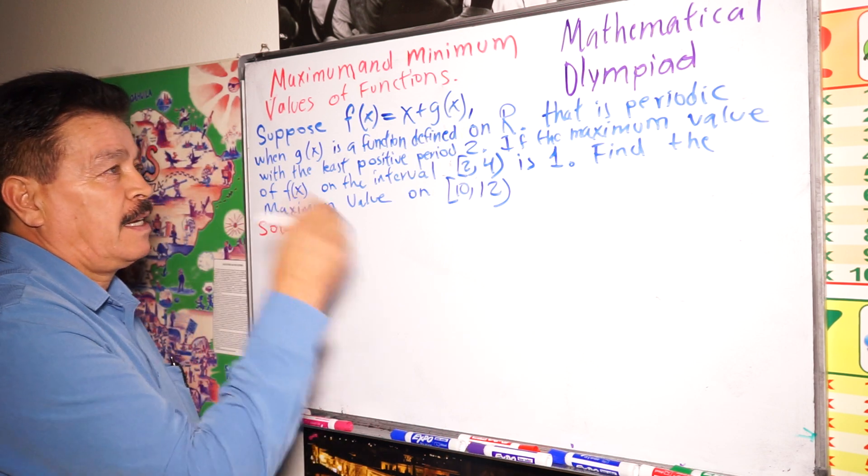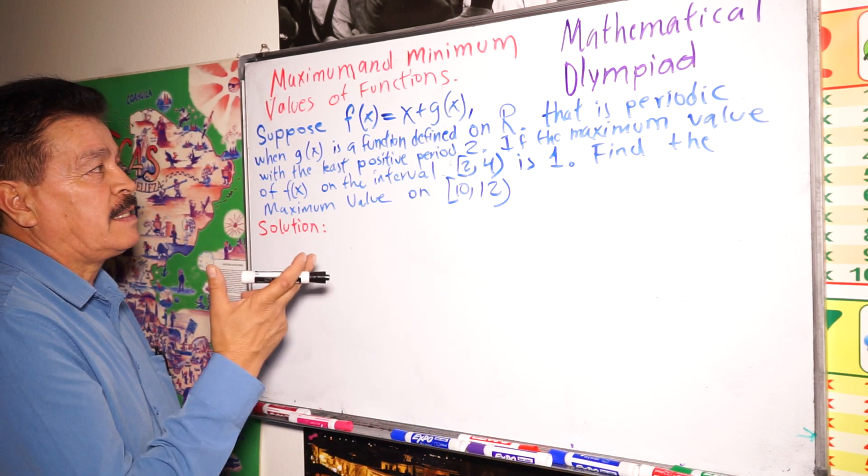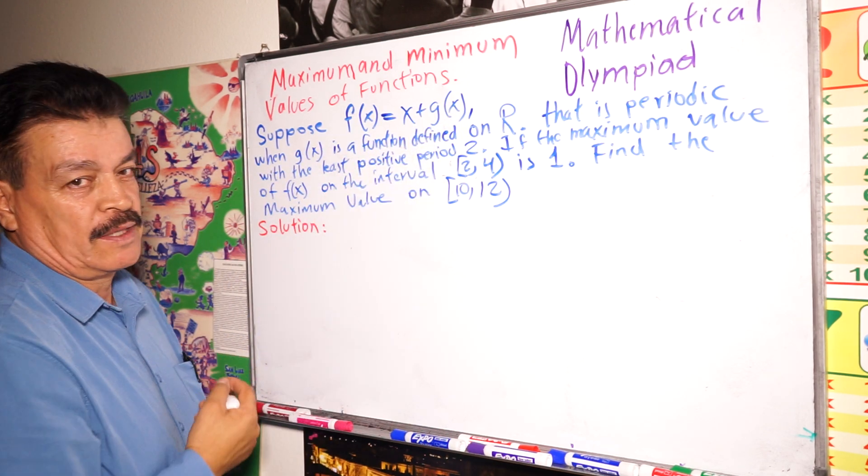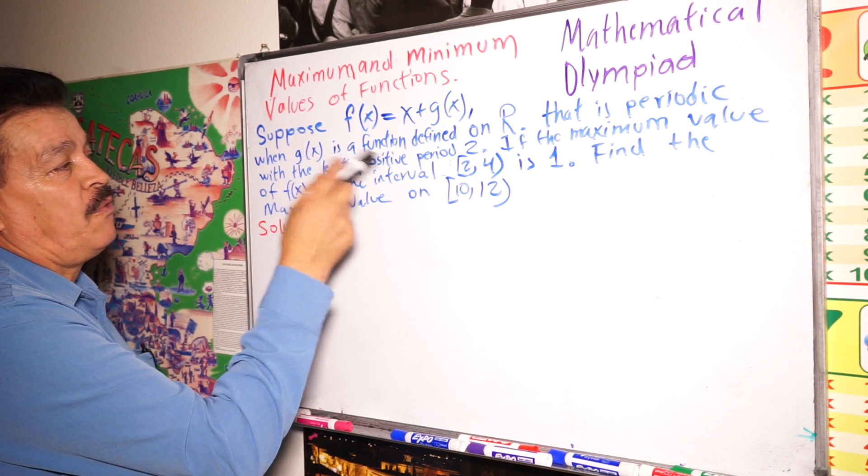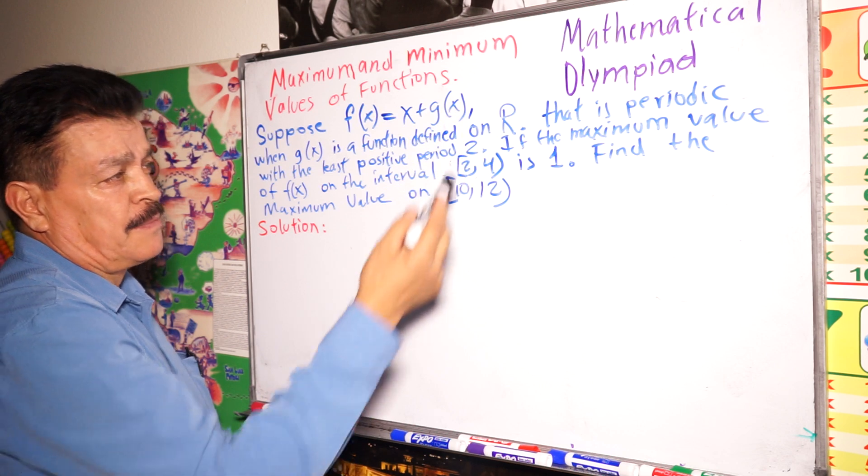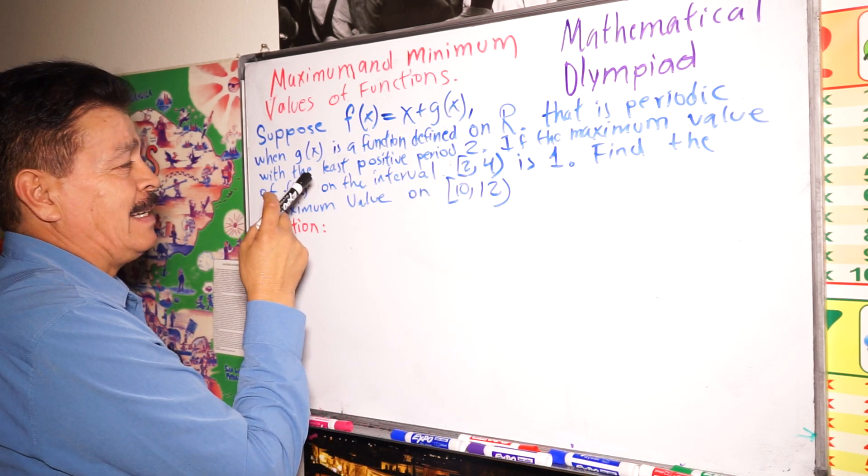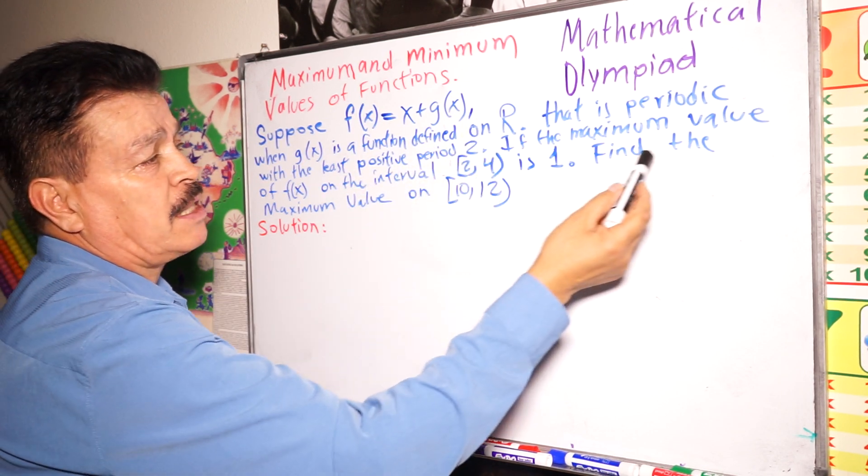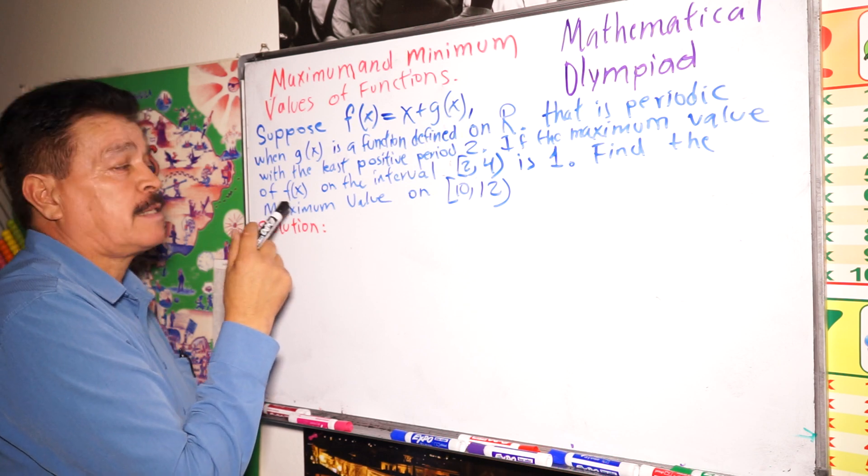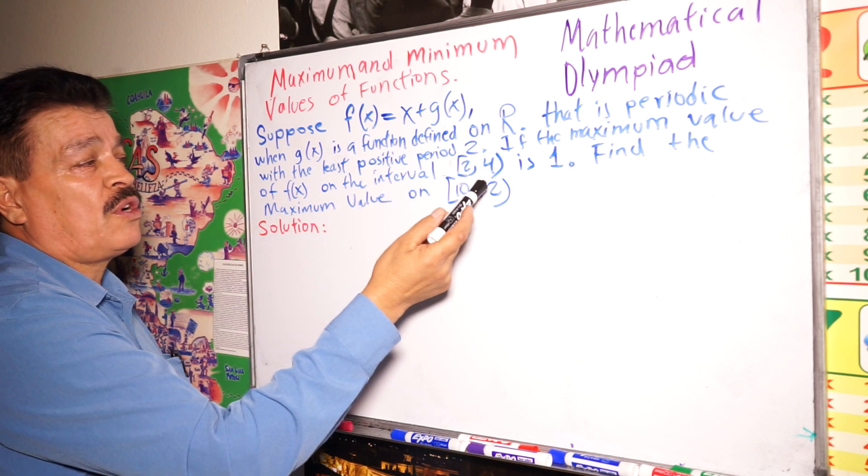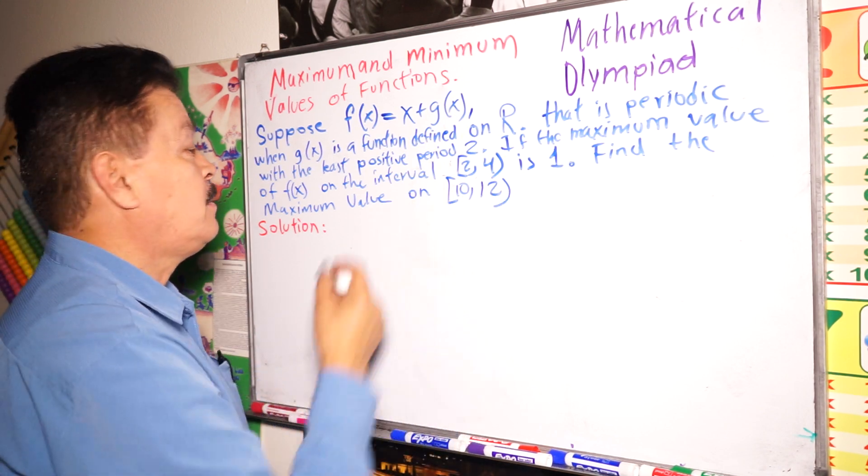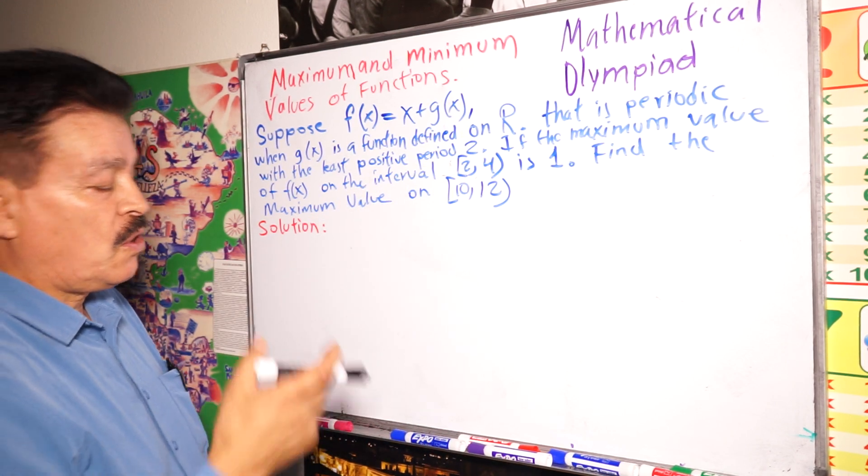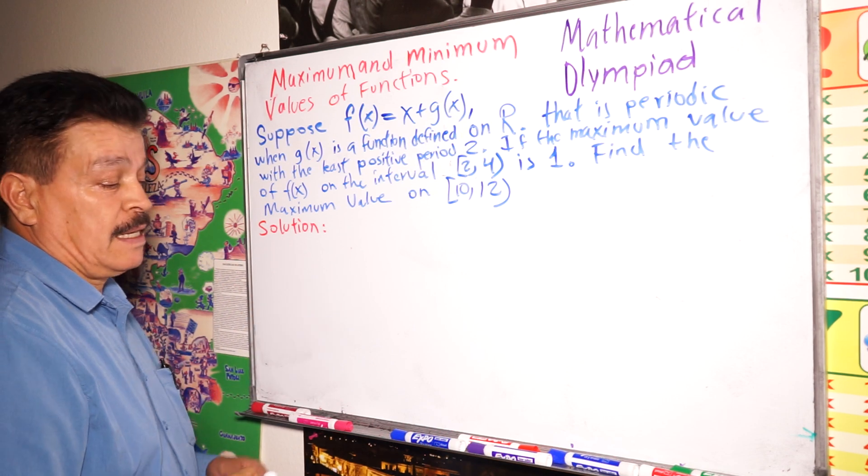One problem in mathematics Olympiad. Our problem is: suppose f(x) equals x plus g(x), when g(x) is a function defined on R that is periodic with the least positive period 2. If the maximum value of f(x) on the interval [2,4] is 1, find the maximum value on [10,12].